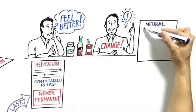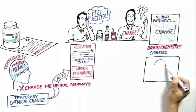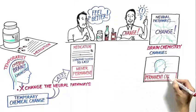But when we change our neural pathways, our brain chemistry changes along with it. And this change can be permanent.